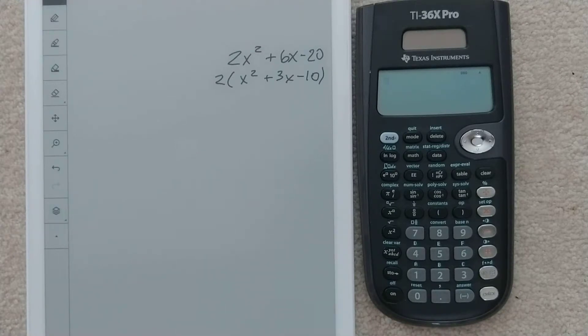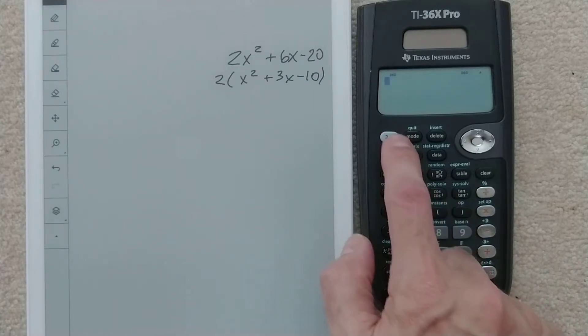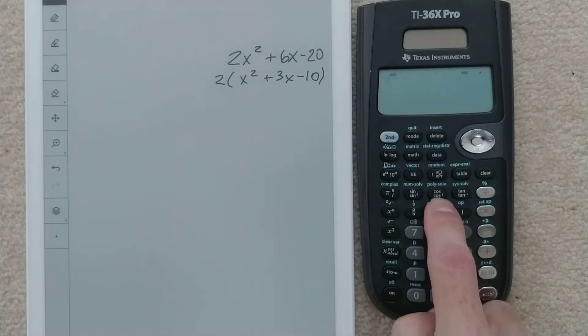All right, now we're ready to use the calculator, and we've got to go into the right mode. We go into this polysolve, which is shift or second, and then right here above the cosine key.